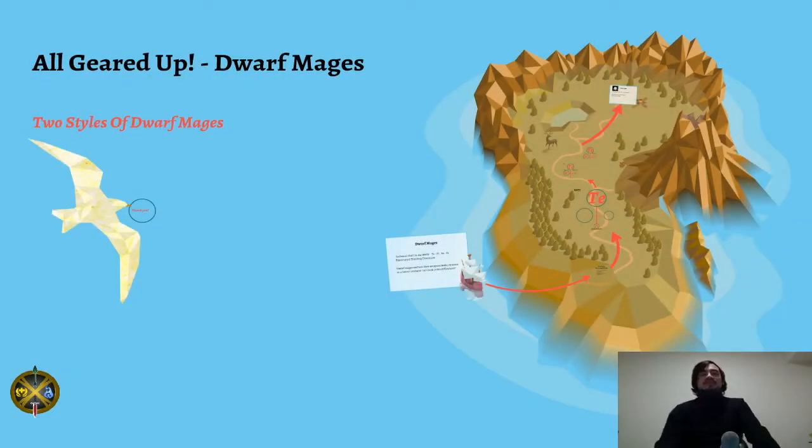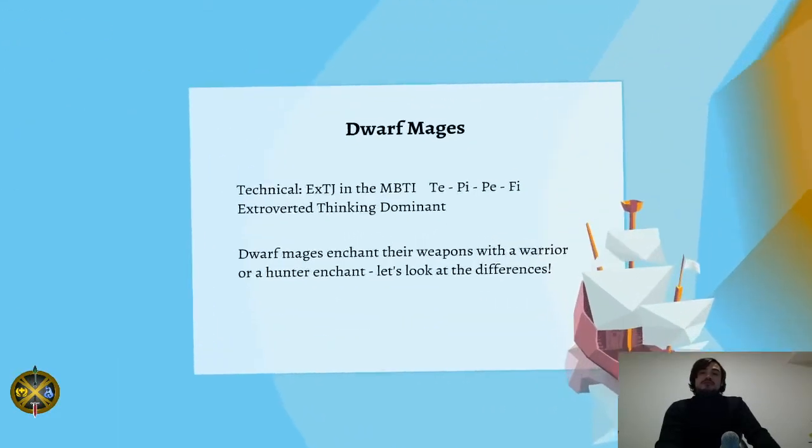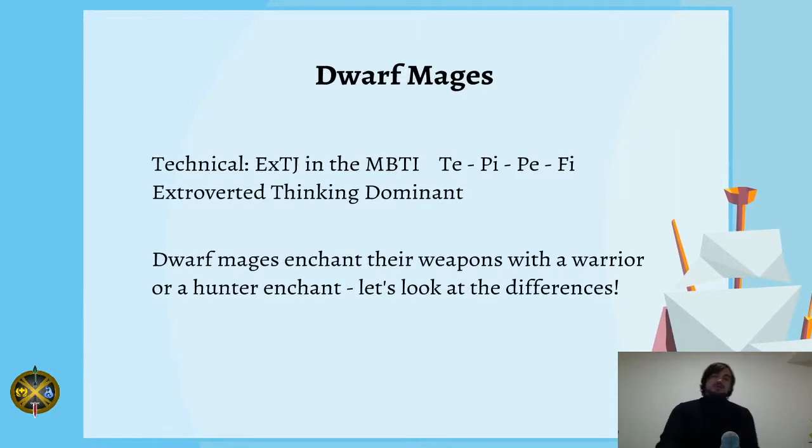Hey team, welcome back. This video is all geared up for dwarf mages, so let's look at the two styles. If you are a dwarf mage, you are technically an extroverted thinking dominant, so this means you're an ETJ in the MBTI style. This means that you lead with extroverted thinking - that's how you prefer to exist in the world.